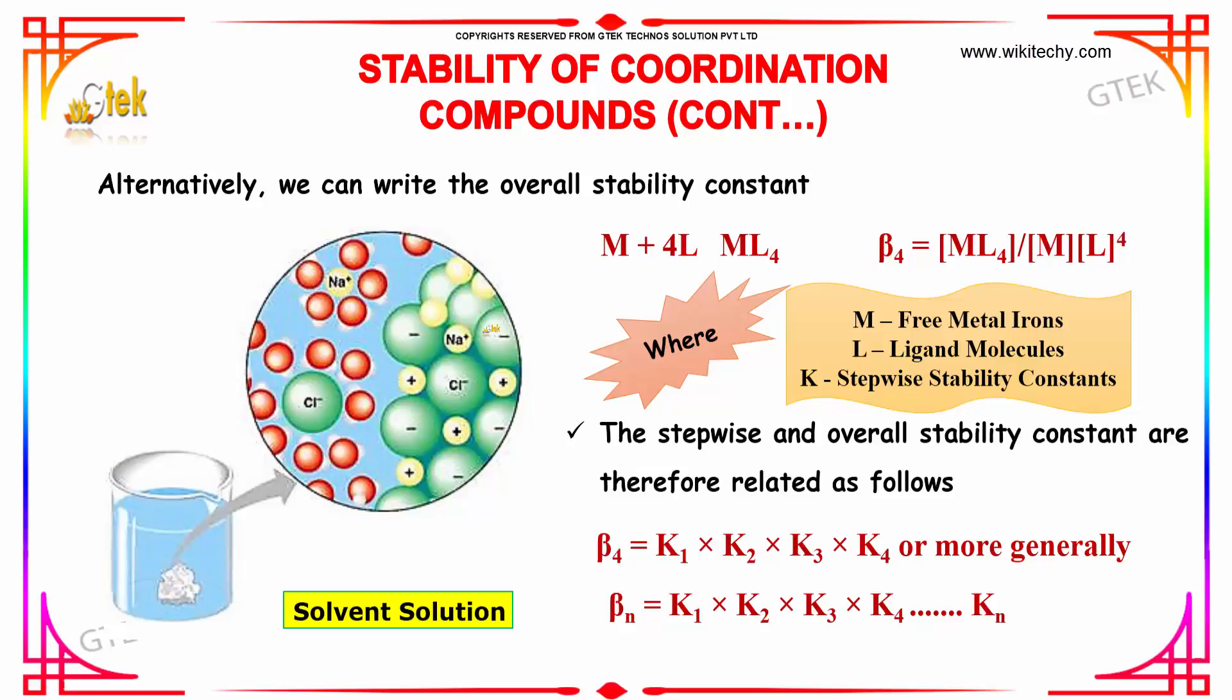Alternatively we can write the overall stability constant as M plus 4L will give ML4. There is an error here. So, beta4 is equal to ML4 divided by M times L to the power 4.